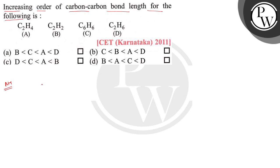In compound A, it is C2H4 and the structure is C double bond C, and this is H4. Here the carbon atoms are sp2 hybridized, so the overlapping is sp2-sp2.